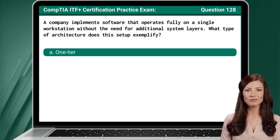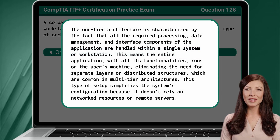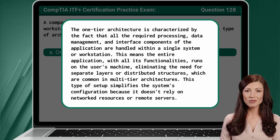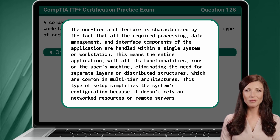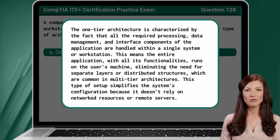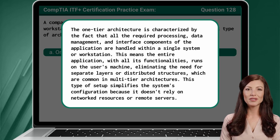The answer is A: One tier. The one-tier architecture is characterized by the fact that all the required processing, data management, and interface components of the application are handled within a single system or workstation. This means the entire application, with all its functionalities, runs on the user's machine, eliminating the need for separate layers or distributed structures, which are common in multi-tier architectures. This type of setup simplifies the system's configuration because it doesn't rely on networked resources or remote servers.